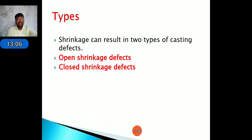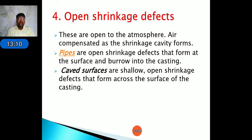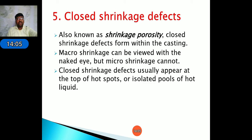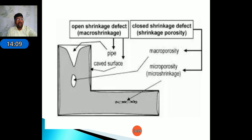There are two types of shrinkage defects: open shrinkage defects and closed shrinkage defects. Open shrinkage defects are open to the atmosphere — air compensates as the shrinkage cavity forms — mainly forming pipes at the surface and extending below into the casting, causing surface and shallow open shrinkage defects. Closed shrinkage defects, also known as shrinkage porosity, form within the casting. Macro shrinkage can be viewed by the naked eye, but micro shrinkage requires X-ray or ultrasonic inspection.